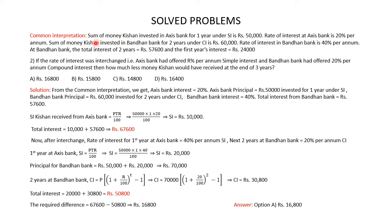Based on the information in the common interpretation, let's answer the next question. If the rate of interest was interchanged — that is, Axis Bank had offered R% per annum simple interest and Bandhan Bank had offered 20% per annum compound interest — then how much less money would Kishan have received at the end of 3 years? From the common interpretation: Axis Bank principal is Rs 50,000 invested for 1 year under simple interest; Bandhan Bank principal is Rs 60,000 invested for 2 years under compound interest; Bandhan Bank interest is 40% per annum; and total interest from Bandhan Bank is Rs 57,600.